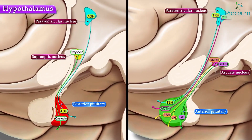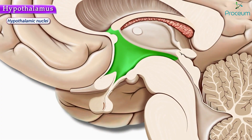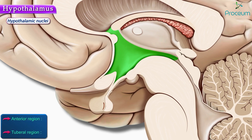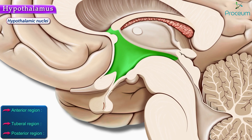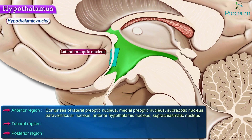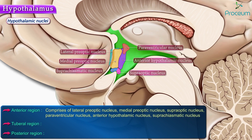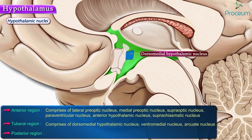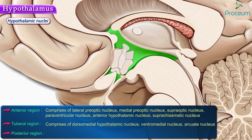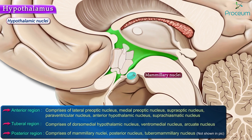The hypothalamic nuclei produce releasing hormones for the anterior pituitary and the hormones released by the posterior pituitary. These nuclei are grouped into three regions: the anterior region, the tuberal region, and the posterior region. The anterior region comprises the lateral pre-optic nucleus, medial pre-optic nucleus, supraoptic nucleus, paraventricular nucleus, anterior hypothalamic nucleus, and the suprachiasmatic nucleus. The tuberal region comprises the dorsomedial hypothalamic nucleus, ventromedial nucleus, and arcuate nucleus. The posterior region comprises the mammillary nuclei, posterior nucleus, and tuberomammillary nucleus.